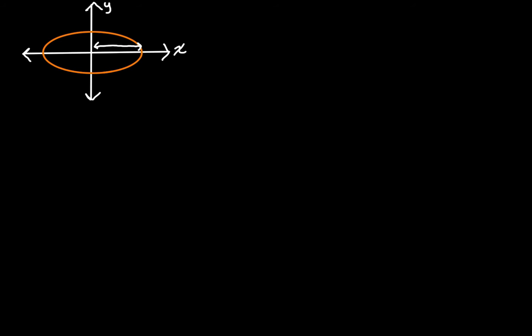The equation for this ellipse is x squared over a squared, where a is the semi-major axis, plus y squared over b squared, where b is the semi-minor axis. This is equal to 1.